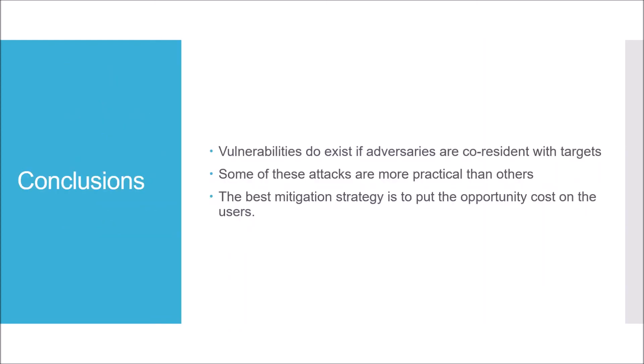In conclusion, vulnerabilities certainly exist when adversaries are co-resident with targets — including side-channel attacks, covert channel attacks, and potential denials of service. Some attacks are more practical than others, but it's far more practical than expected for an adversary to become co-resident with a target. The best mitigation is to put the opportunity cost on users: if they're willing to take the risk of sharing physical hardware, that's their choice; if not, they can pay for dedicated hardware.